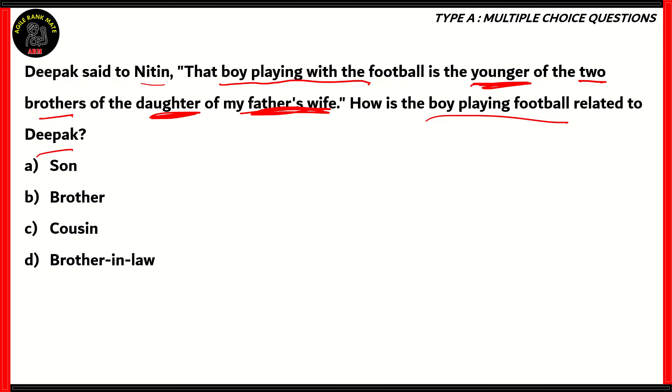So how do we solve this question? Now, my father's wife would mean my mother. So let's consider Deepak here has a dad who's married to his mom. And the mom also has a daughter. Now this daughter has brothers. One of them is the boy who's younger and the other is Deepak who's elder. Now how do we know that there are two brothers? Well, it's mentioned in the question. There are two brothers. And since Deepak is talking about his father's wife, he has to be one of the brothers present.